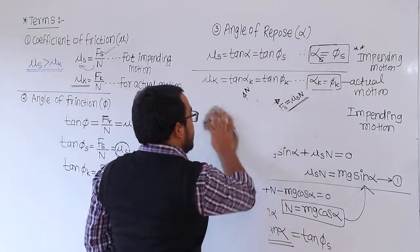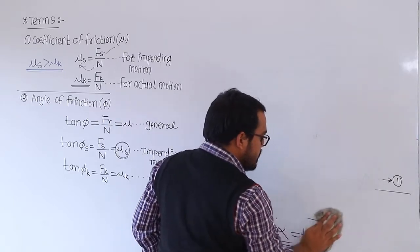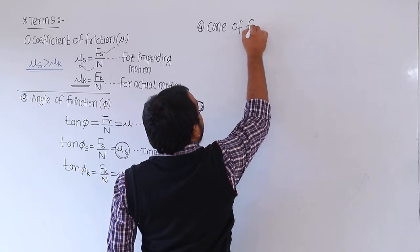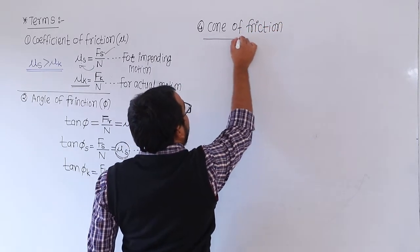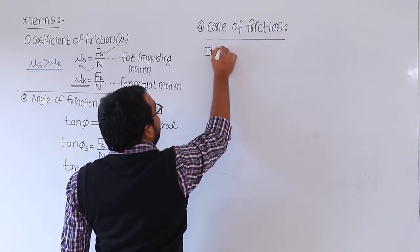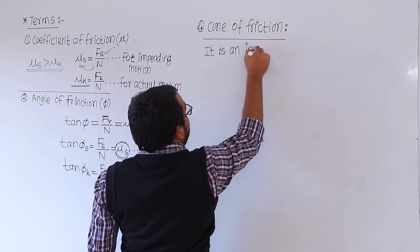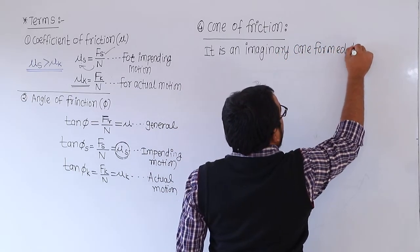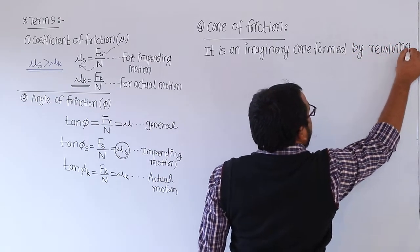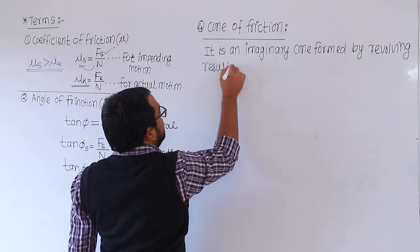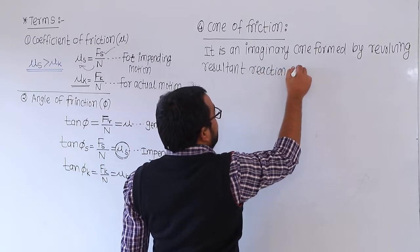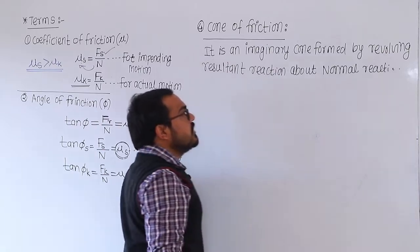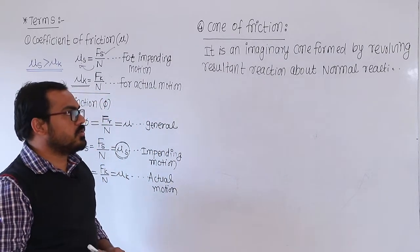After angle of repose, the next concept is the cone of friction. The cone of friction is an imaginary cone formed by revolving the resultant reaction about the normal reaction.